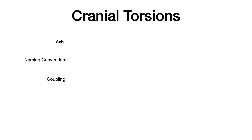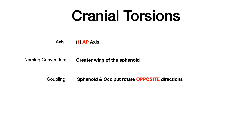Starting with torsions — in all of these dysfunctions, what you need to know are the axes, how we name the dysfunction, and what the coupling is. Coupling refers to what's happening between the sphenoid and the occiput. For cranial torsion: there's one AP axis, and we name this depending on the greater wing of the sphenoid. The coupling is that the sphenoid and occiput rotate in opposite directions.